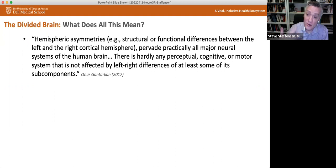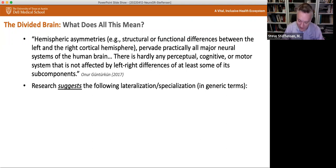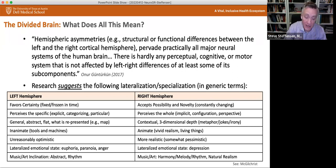So what does all this mean? And where am I going with all of this? Again, I started this whole thing with, this is a lot of controversial topics. I think that what should be agreed upon is that there is some lateralization of brain activity. There does seem to be this sort of asymmetry in the functioning of the brain that we have to assume has structural and evolutionary benefit. Guntergun is out of Germany's Turkish born neuroscientist who is the one who studied pigeons and has been one of the world experts in sort of this lateralization talks about hemispheric asymmetries pervade practically all major neural systems of the human brain. There is hardly any perceptual cognitive or motor system that is not affected by left-right differences of at least some of its subcomponents.